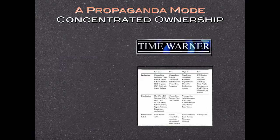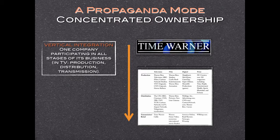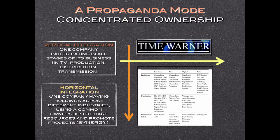Consider the example of Time Warner in this slide. Vertical integration happens when one company participates in all stages of its business such as production, distribution, and exhibition — or transmission in the case of television — whereas horizontal integration happens when one company has holdings across different industries using a common ownership to share resources, which is also called synergy.